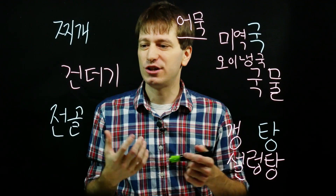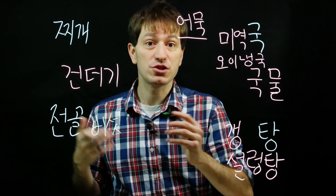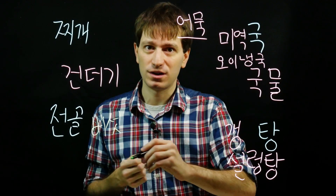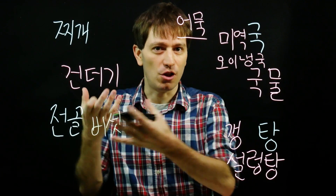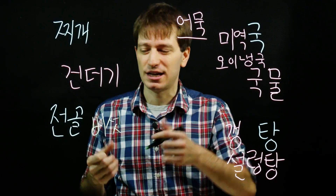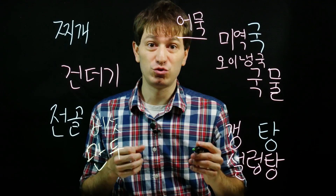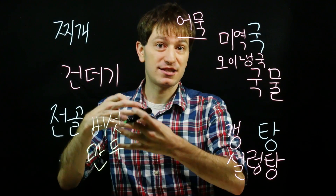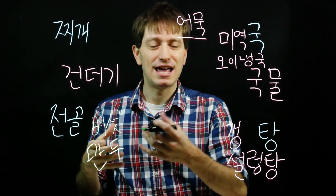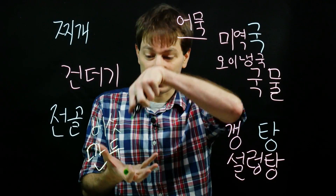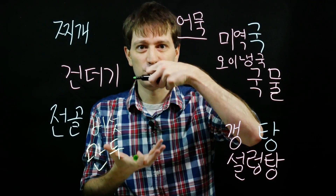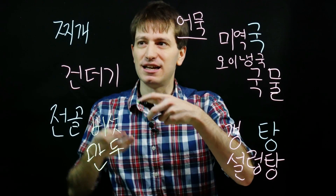For example, you could have 버섯전골 made with large mushrooms, or 만두전골 filled with lots of 만두 — and those you could also take out with your spoon and eat separately.